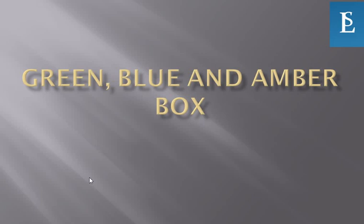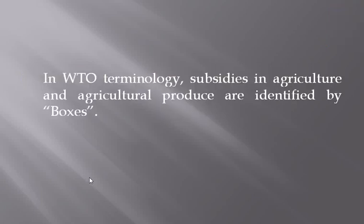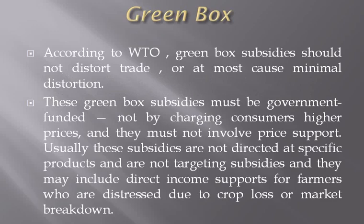Hello everyone, let's talk about green, blue, and amber box. According to the WTO (World Trade Organization), subsidies in agriculture and agricultural produce are identified by boxes. Let's go with green box first.